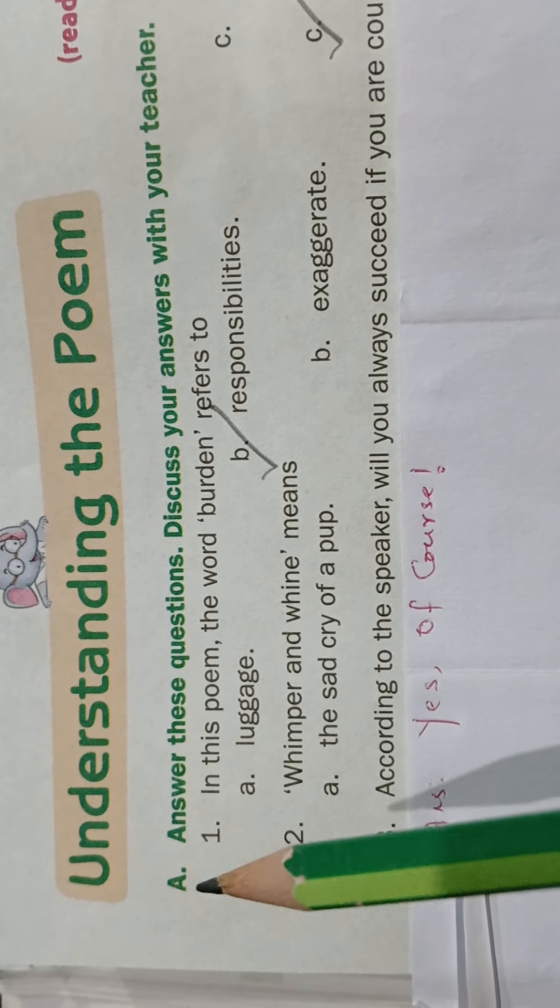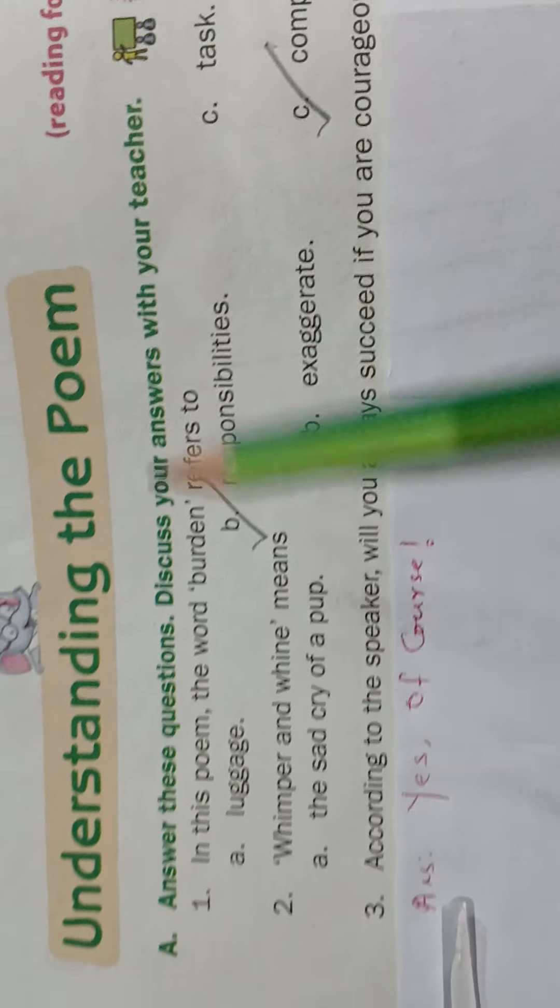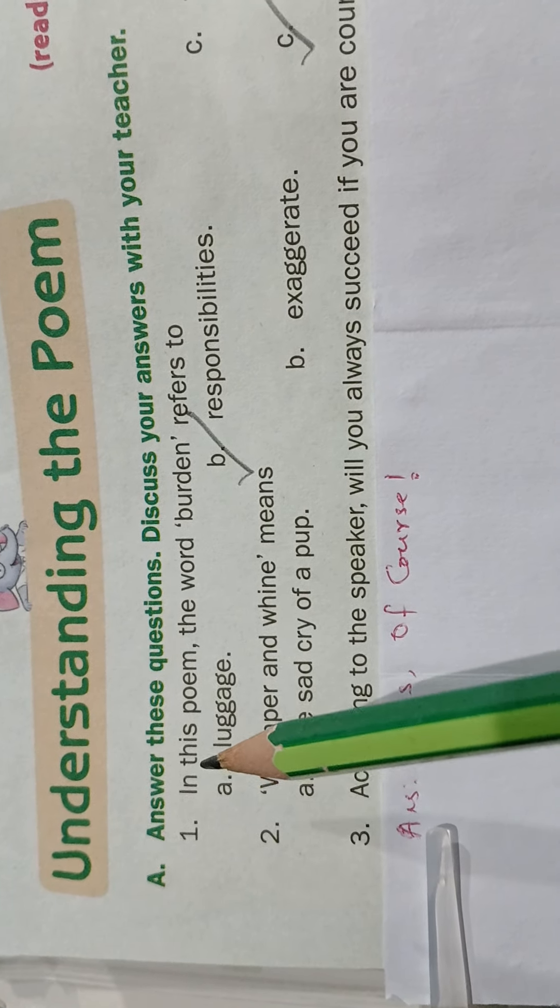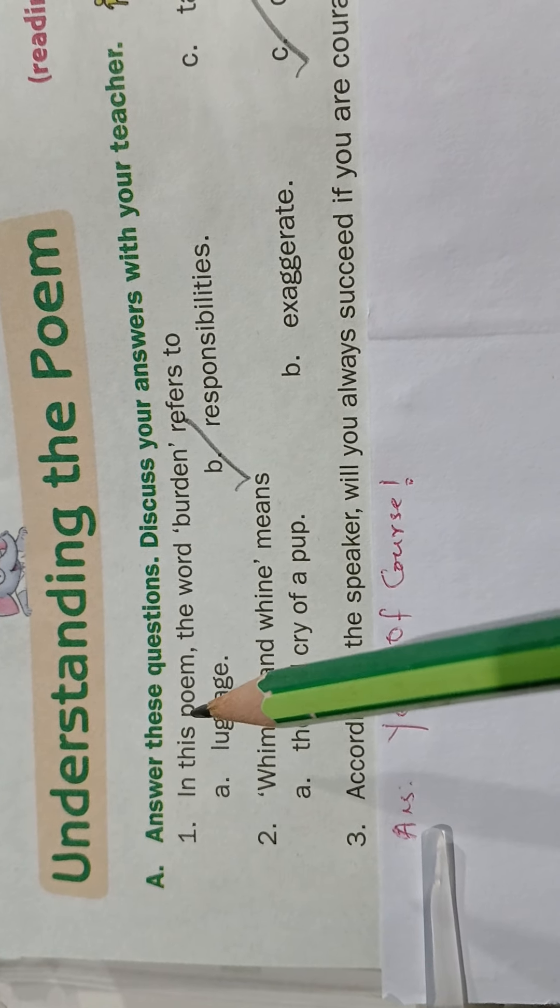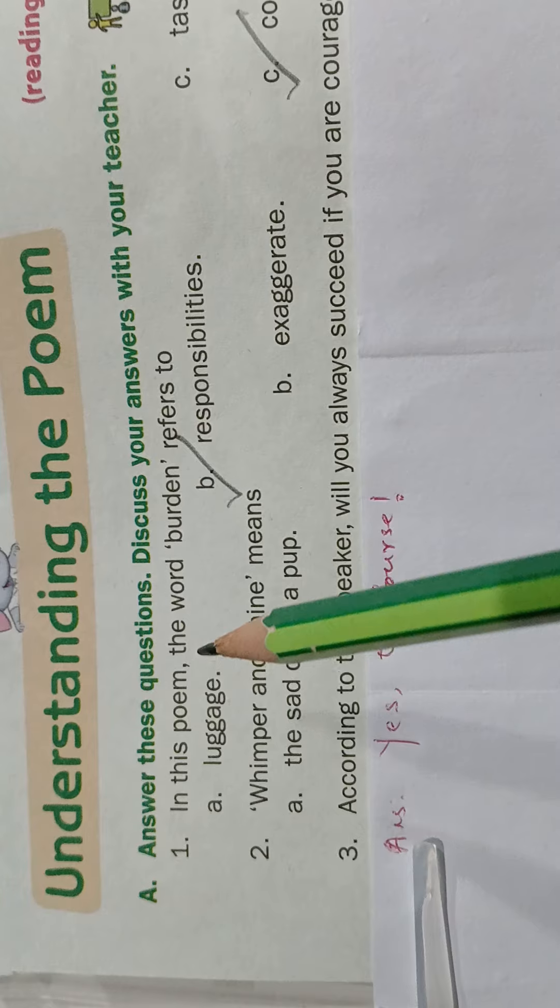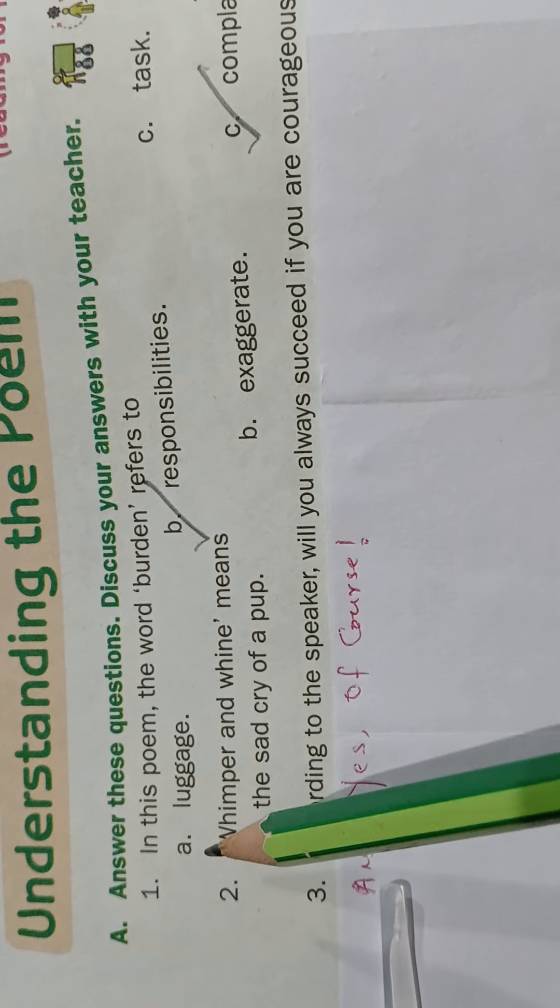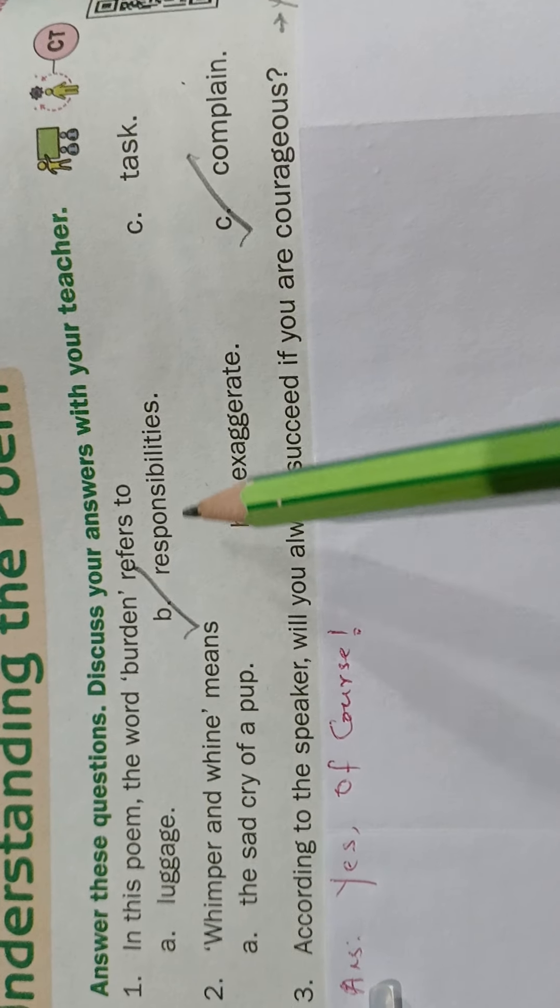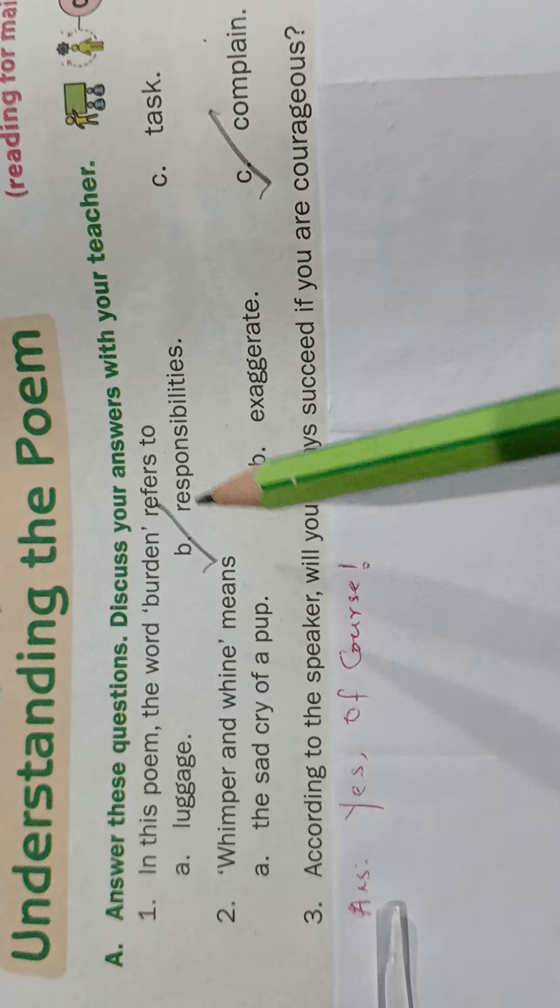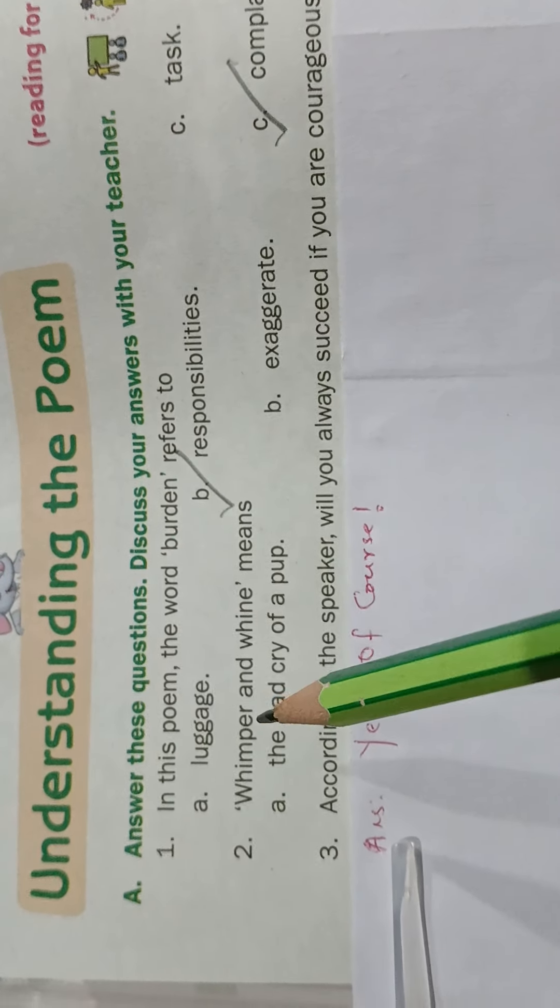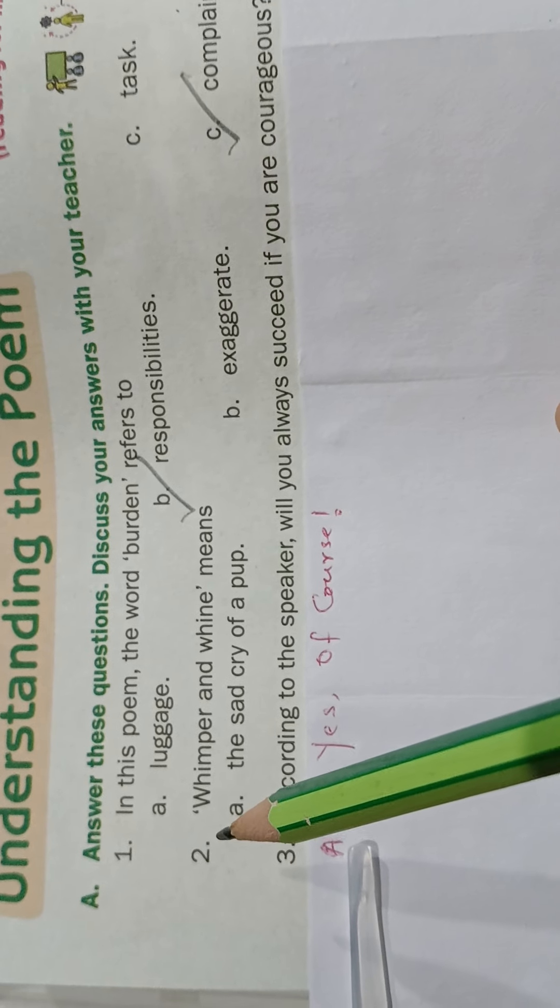Question number A: Answer these questions, discuss your answers with your teacher. First, in this poem, in the poem named Courage, the word burden refers to: Option A luggage, Option B responsibilities, Option C task. Correct, and the option is Option B, that is responsibilities. Question number second.